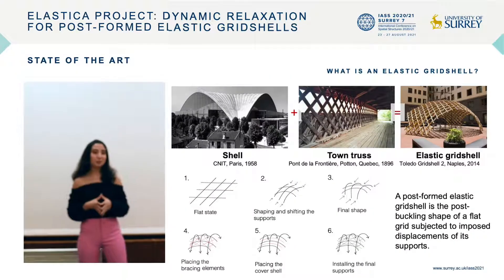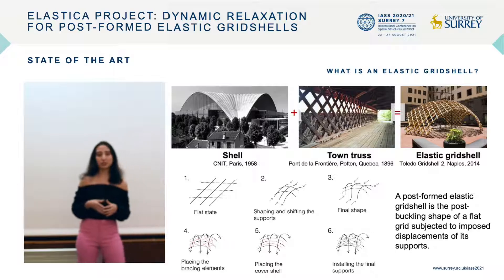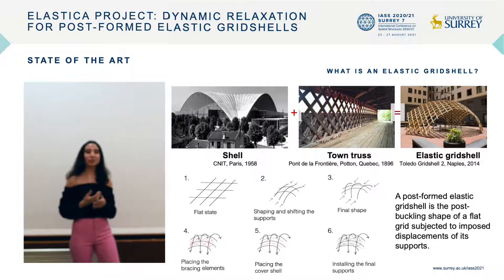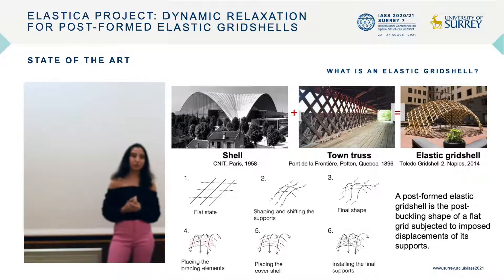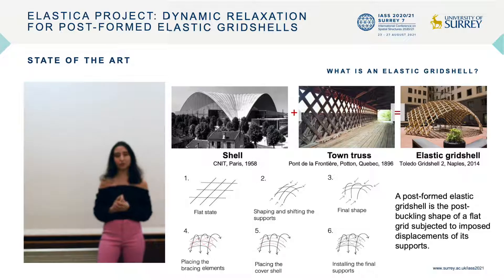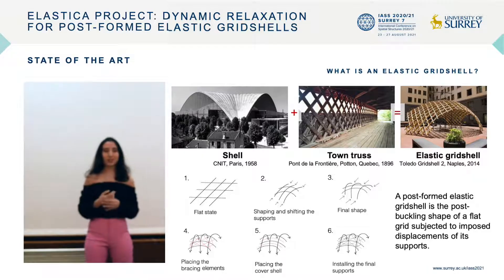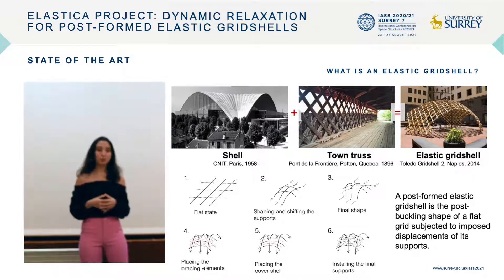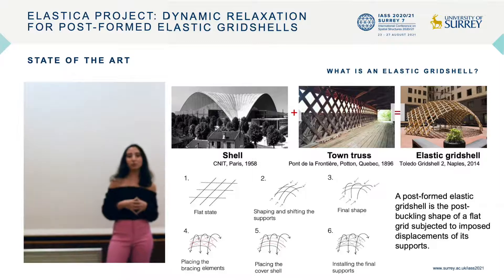Let's start with the definition. What is an elastic grid shell? In architecture, a shell is a continuous thin structure with a curved surface. Its rigidity is related to its curvature. A grid shell is a structural lattice of bars forming a curved surface.